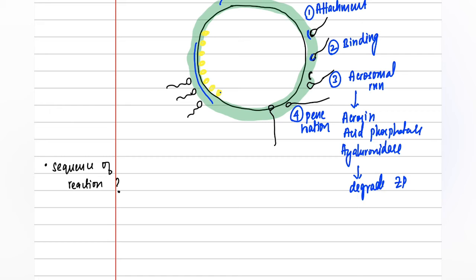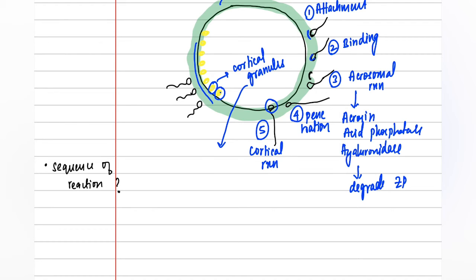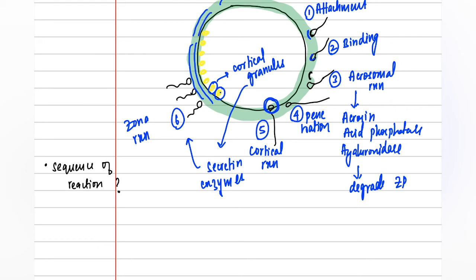The fifth step in fertilization is the cortical reaction. After the sperm penetrates, it reaches the cortex. Cortical granules present in the cortex are released. These release secretin and many enzymes, which are responsible for the next step known as the zona reaction. In the zona reaction, the zona pellucida — except for the site of penetration — becomes hard and impenetrable, preventing another sperm from attaching or penetrating. So the zona reaction is a process which prevents polyspermy.